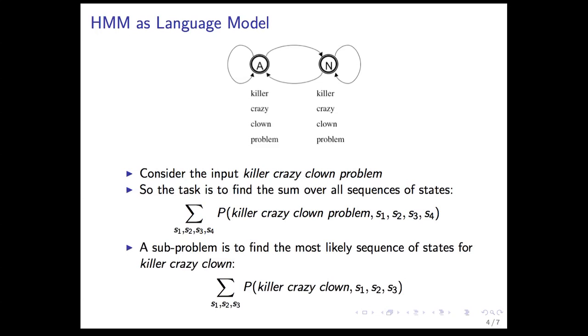Just like before, we want to split this up into a subproblem. Instead of solving it for all four words, we want to take a prefix. So instead of 'killer crazy clown problem', we just look for the sum over the sequence of states for 'killer crazy clown'.